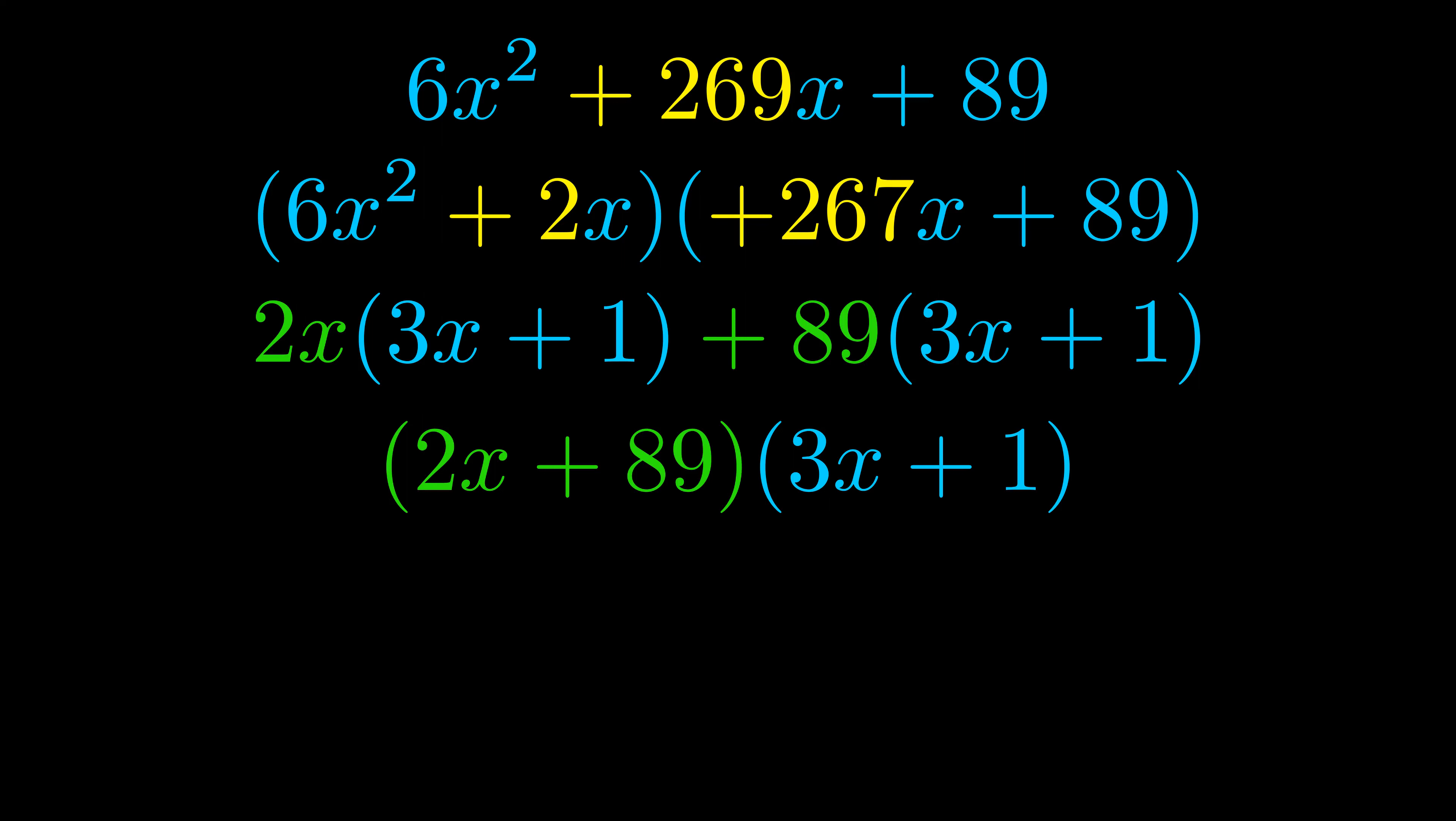Those blue values will become one of our factors and we will combine the two green values, the GCFs that we pulled out, to get the other one. And that is our fully factored equation.